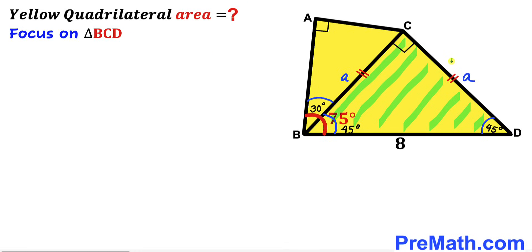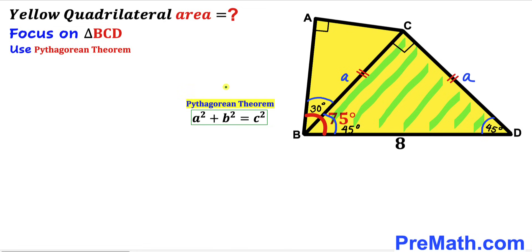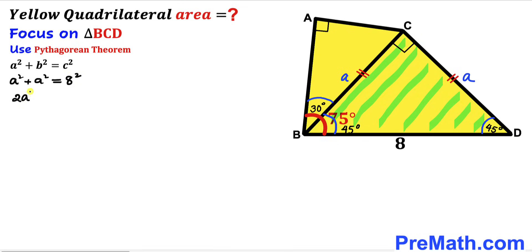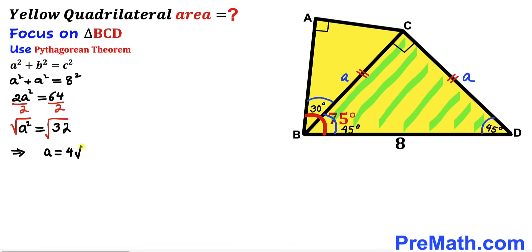Now let's focus on right triangle BCD again and apply the Pythagorean theorem to find the value of lowercase a. The Pythagorean theorem states a² + b² = c². In our case the hypotenuse is 8 and both legs are lowercase a. So we get a² + a² = 8², which simplifies to 2a² = 64. Dividing both sides by 2 gives a² = 32, and taking the square root gives a = 4√2 units.